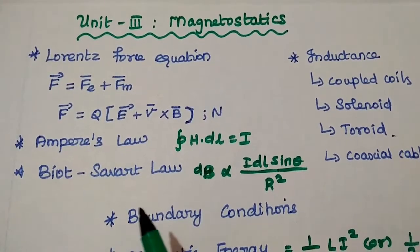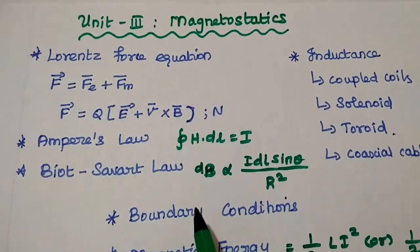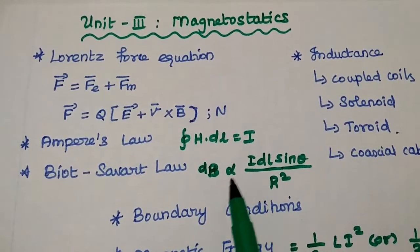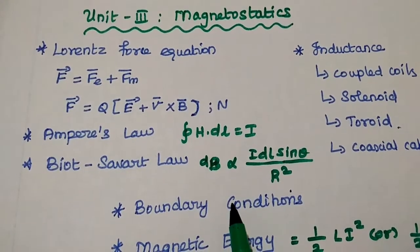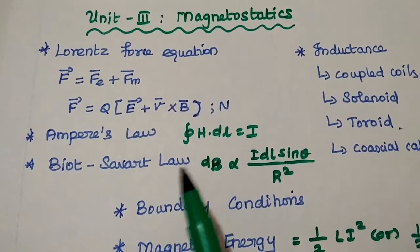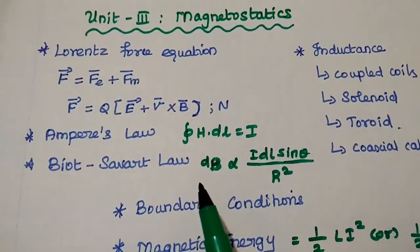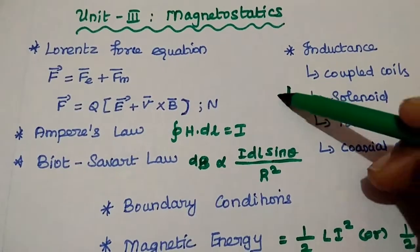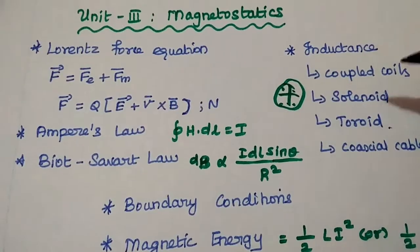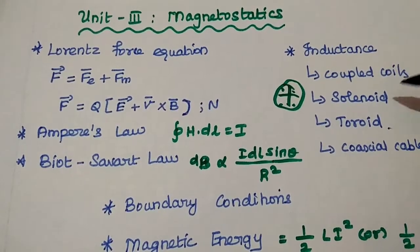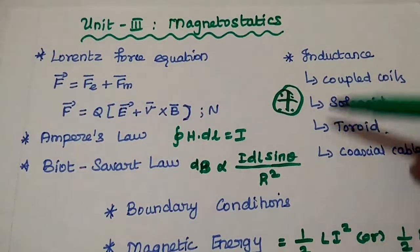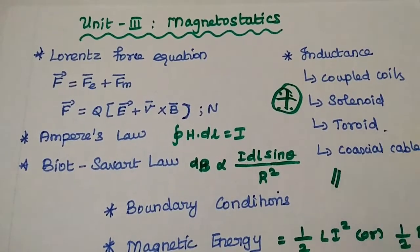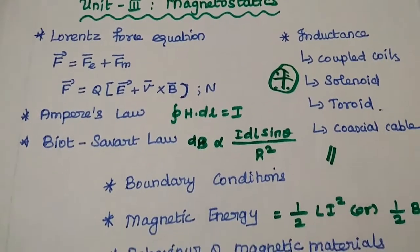Biot-Savart law states that the magnetic field intensity or magnetic flux density is directly proportional to the current element and inversely proportional to the square of the distance. These three topics and their applications are very important. The second half covers inductance — definitely expect derivations of inductance for coupled coils, solenoid, toroid, or coaxial cable, as well as numerical problems. Inductance is very important in this unit, along with these two laws.